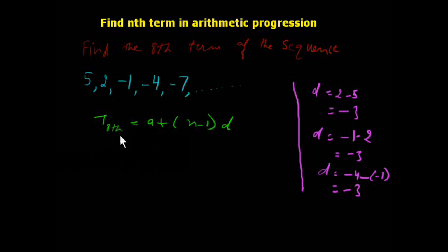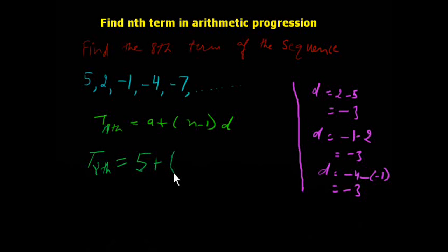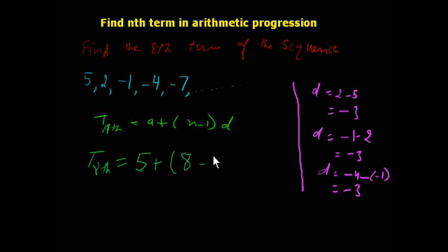So the formula of nth term we know: nth term equals a plus n minus 1 multiplied with d. So for 8th term we can easily calculate: this is 1st term 5 plus n, n means 8th term, so we write 8 minus 1 and we show here minus 3.